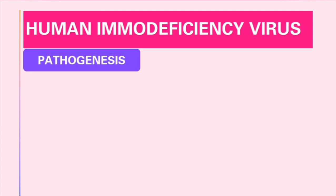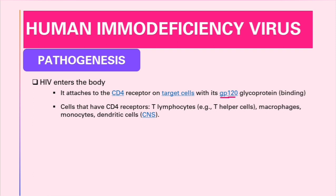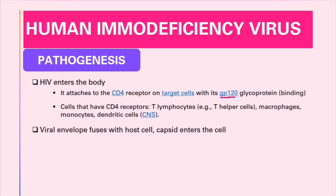Now let's talk about the pathogenesis of HIV. First, HIV enters the body and attaches to the CD4 receptor on target cells using its glycoprotein 120 (gp120) — that's the reason we needed to track it. The cells that have CD4 receptors include T helper lymphocytes, macrophages, monocytes, and dendritic cells in the CNS.